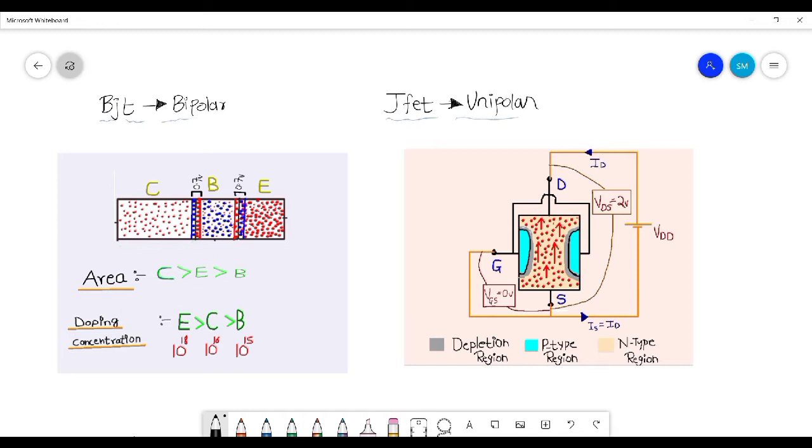Hello everyone, in this video we are going to discuss the key differences between BJT and JFET. As you can see here, BJT is known as bipolar and JFET is known as unipolar. We will try to discuss and get the meaning of these two words.